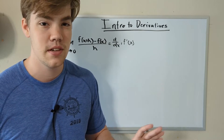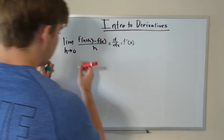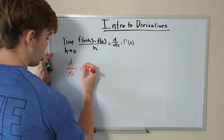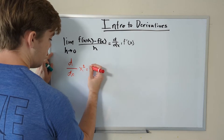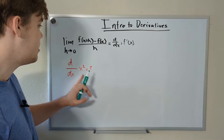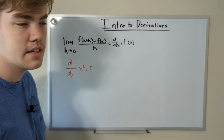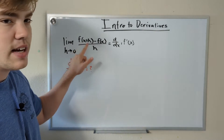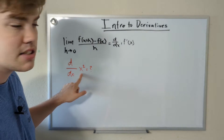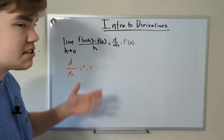Let's use this equation to find a derivative. Let's find d/dx of x squared. We're going to plug this into our equation that can solve any derivative. First of all, when we have a function f(x+h), that means we have to replace every x value with x plus h. f(x) is just the function itself, and h is just h.